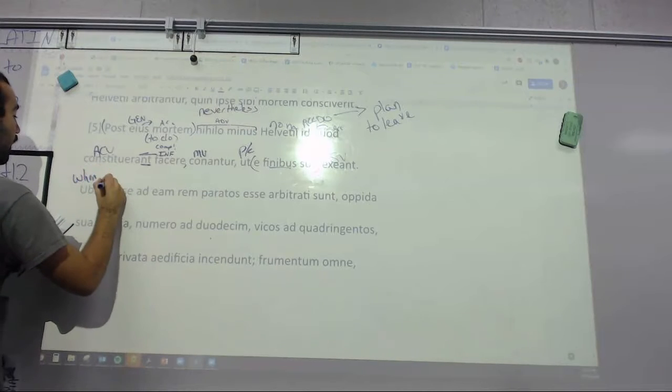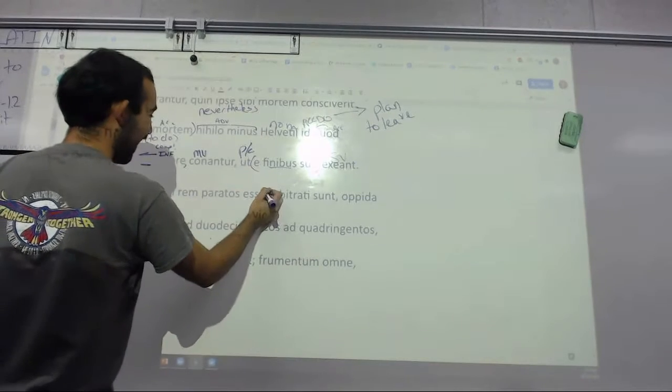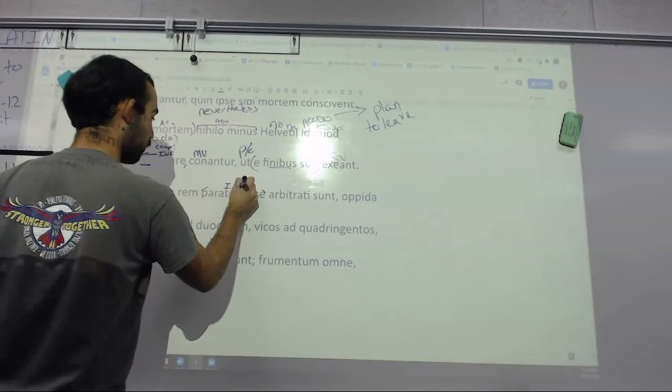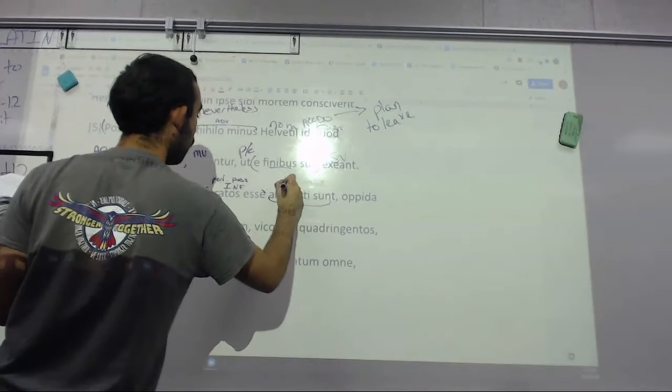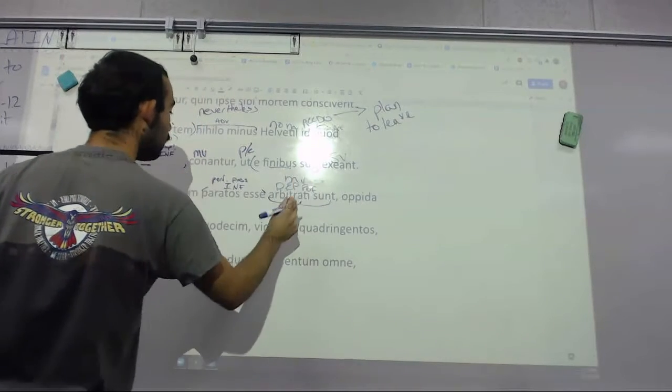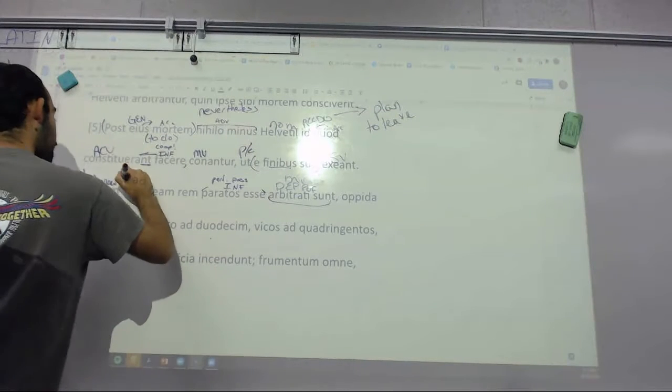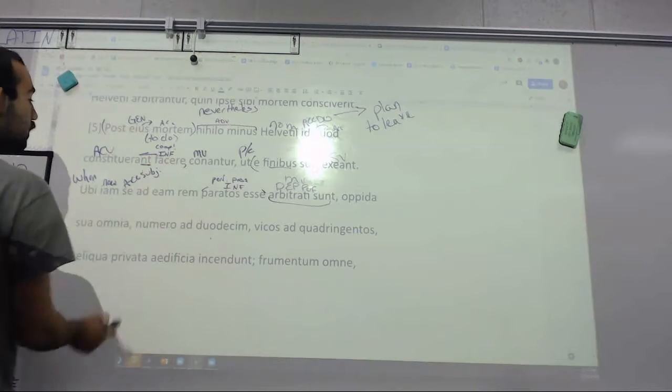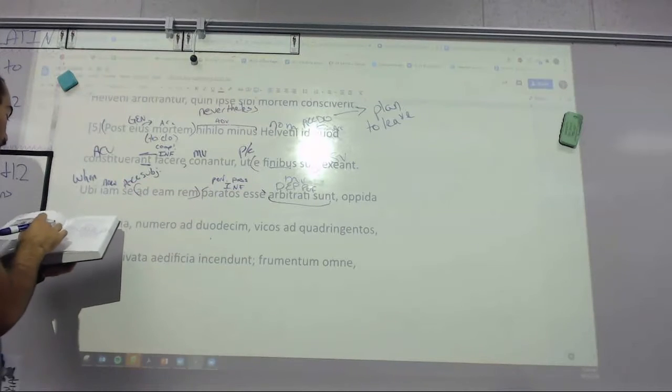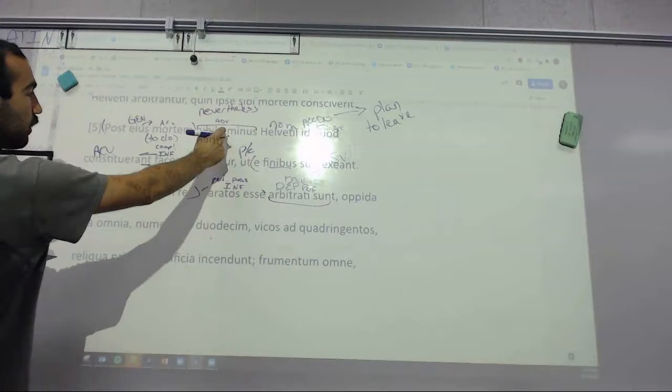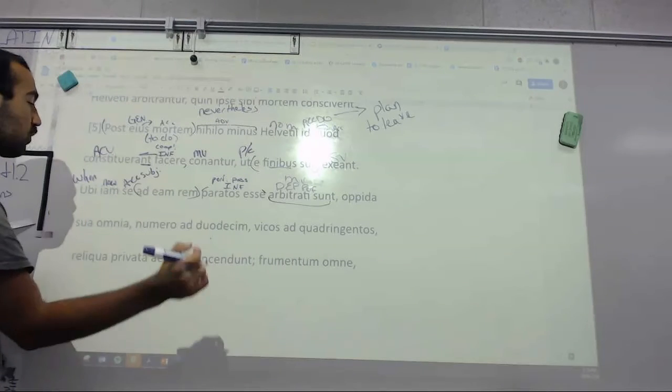Ubi is when here. Iam is now. When now, this is an infinitive that's passive and perfect. And then we got arbitrati sunt. This is a deponent perfect form, this is our main verb. They thought, arbitror, that's where we get the word arbitrator. They thought that se themselves have been prepared ad eam rem, the book has a nice note about this, for this undertaking. They thought they were prepared for this journey. And when they thought this, this is what they did next.